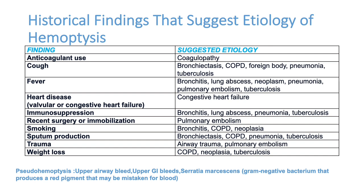History can give clues to diagnose the cause of hemoptysis. If the patient is on anticoagulants like warfarin or heparin, that may be the reason. Cough with recurrent sputum suggests bronchiectasis or COPD; acute cough suggests foreign body or pneumonia; chronic cough suggests TB. Fever points to bronchitis, lung abscess, malignancy, pneumonia, pulmonary embolism, or TB.